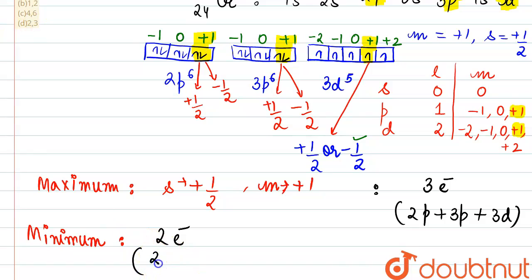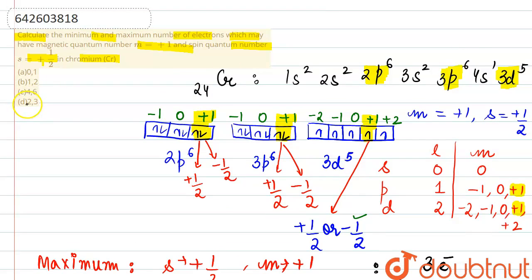So which option will be matching? Minimum value of two electrons and maximum of three. So option number D is correct. Thank you.